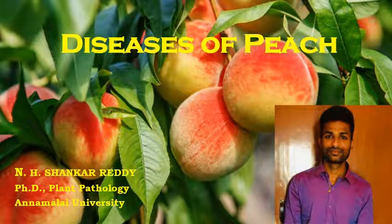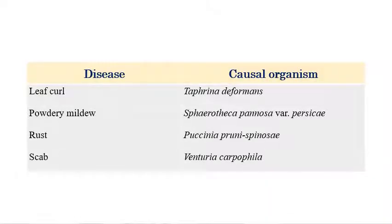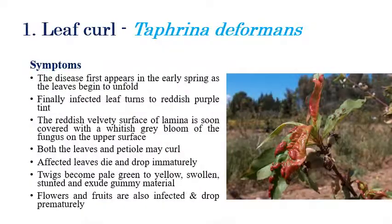We will see the list of important diseases in peach. My name is NH Shankar Reddy and I am doing a PhD in Plant Pathology at Annamalai University. The important diseases in peach are: peach leaf curl, caused by Taphrina deformans; powdery mildew, caused by Sphaerotheca pannosa var. persica; rust, caused by Phakopsora pruni-spinosae; and scab, caused by Venturia carpophylla. We will now see each one in detail.